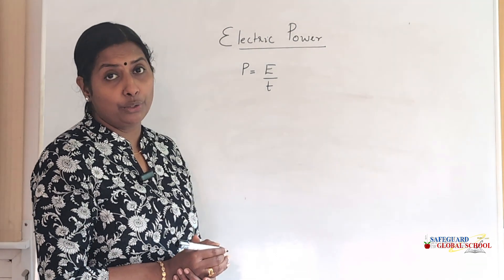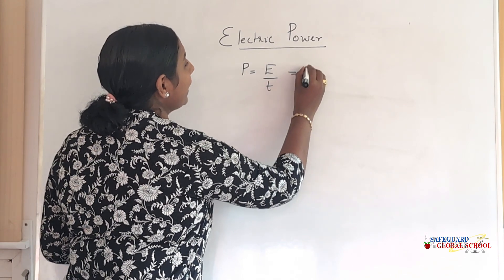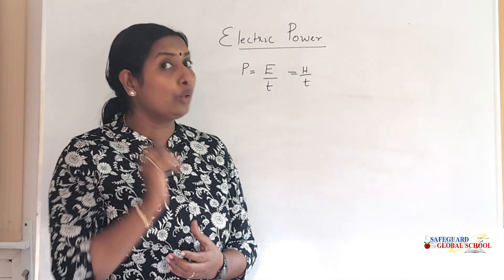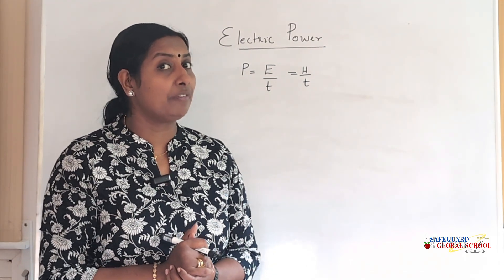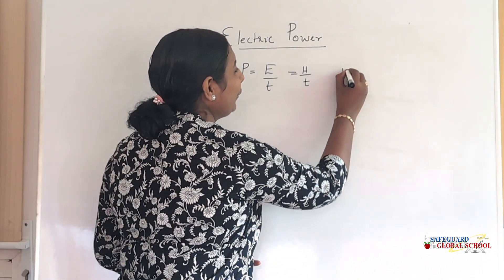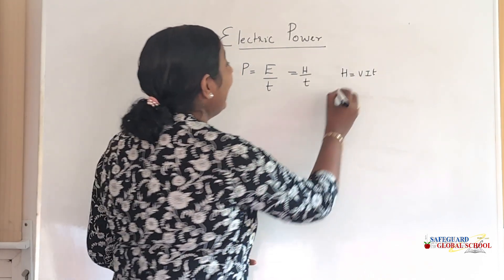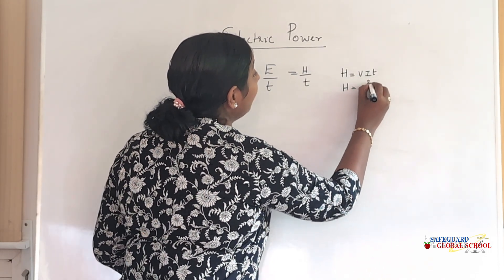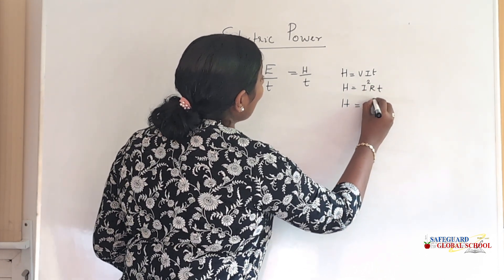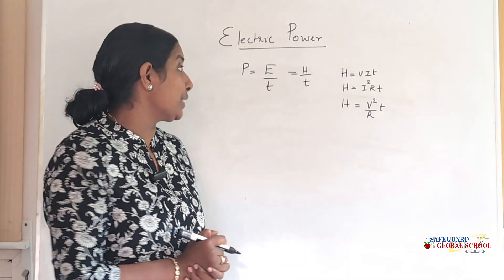As we take heat energy consumed or heat liberated or heat dissipated in a circuit, this can be written as H by T. Do you remember the three equations we studied in our previous class? H is equal to V×I×T, H is equal to I²RT, and H is equal to V²/R × T. These are the three equations we studied in the last class.